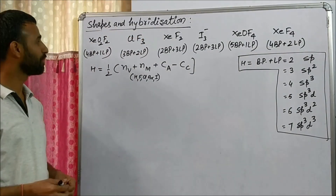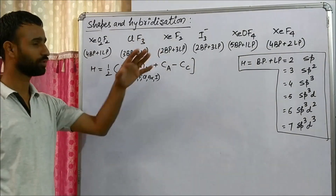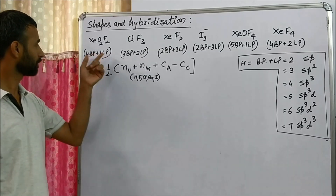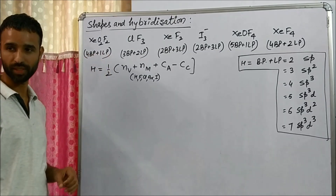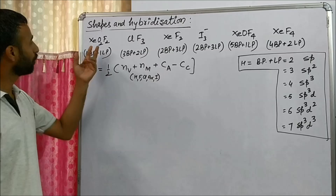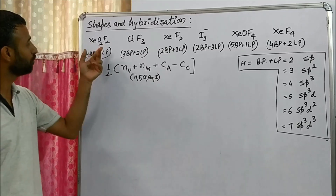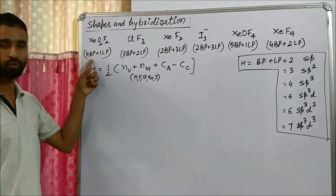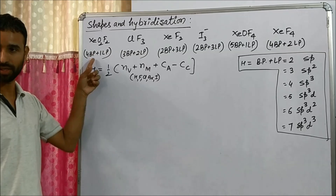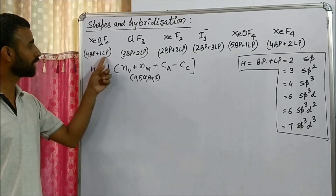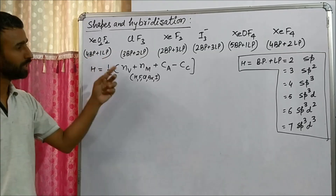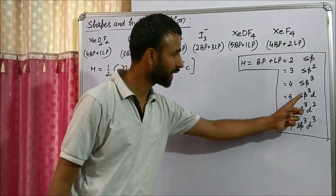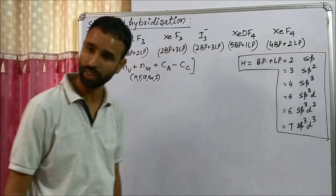Now we'll look at shapes and hybridization of these molecules. We have already calculated bond pairs and lone pairs in the previous video. For XeO2F2, there are four bond pairs and one lone pair, so the total sum is 5. When the total is 5, the hybridization is SP3D.